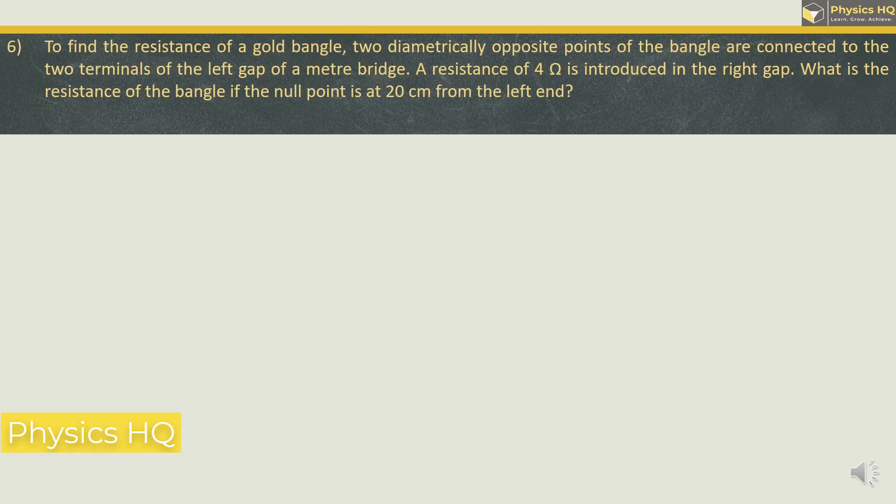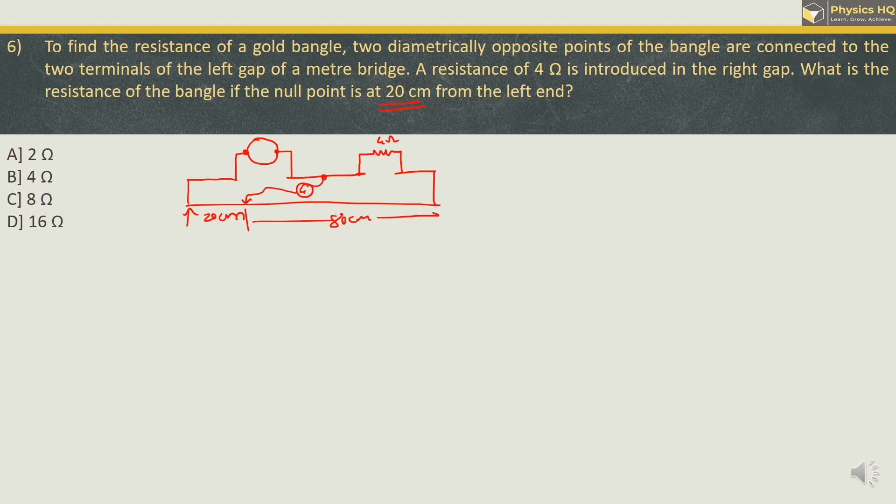Let us check out the next MCQ. To find the resistance of a gold bangle, two diametrically opposite points of a bangle are connected to the two terminals of the left gap of a meter bridge. A resistance of 4 Ohm is introduced in the right gap. What is the resistance of the bangle if the null point is at 20 cm from the left end?